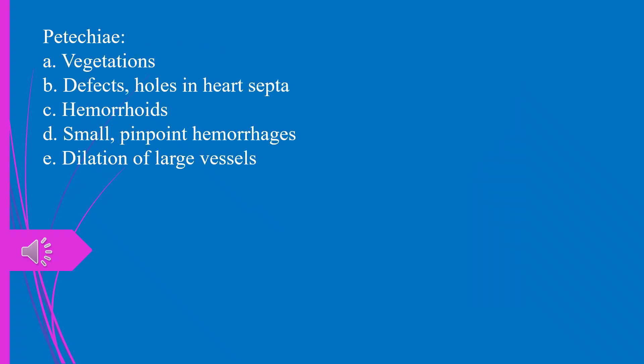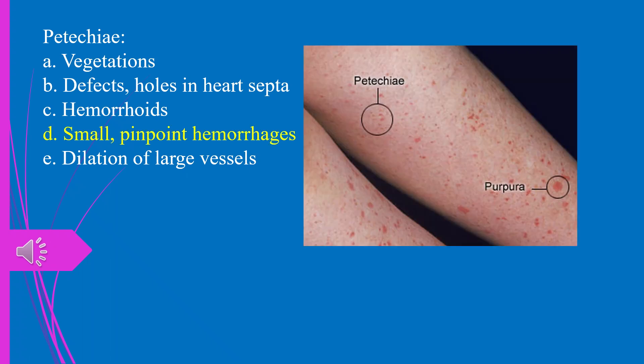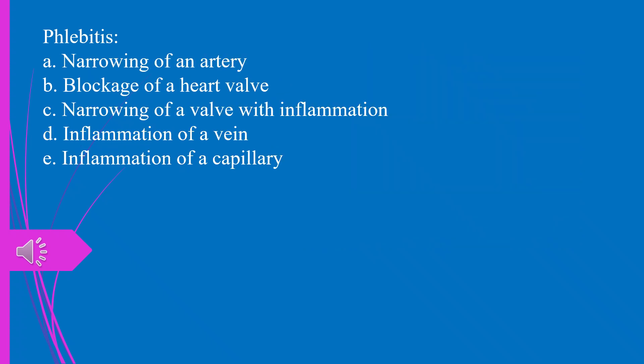Question 19. Petechiae: a) vegetations, b) defects/holes in heart septa, c) hemorrhoids, d) small pinpoint hemorrhages, e) dilation of large vessels. The answer is d, small pinpoint hemorrhages.